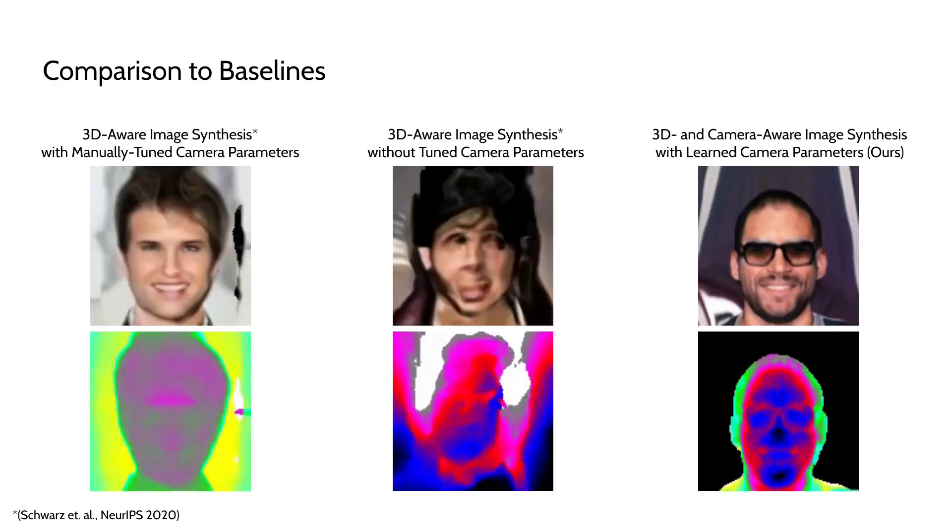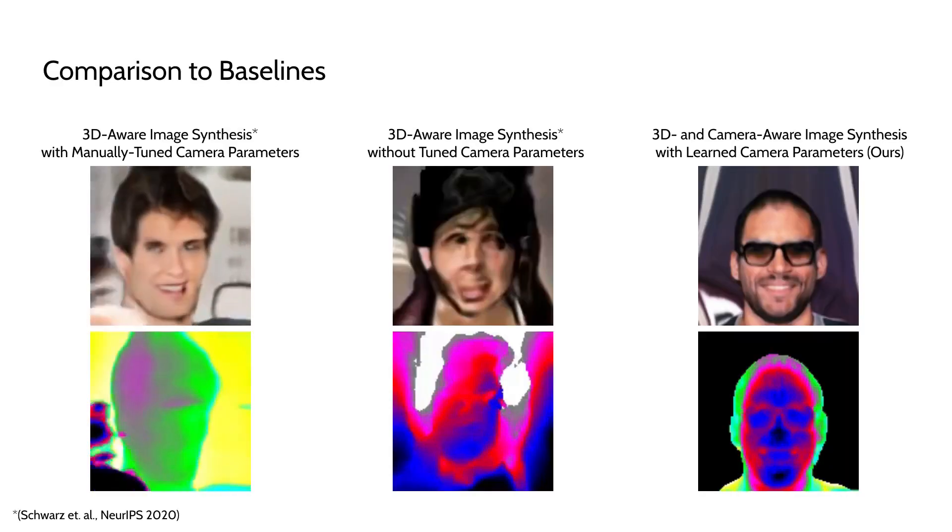The radiance field representation also allows us to render expected depth, which we compare now. Similar to before, the representations learned by GIRAFFE with manually tuned camera parameters are 3D-consistent, but contain floating artifacts, also visible in the depth maps.